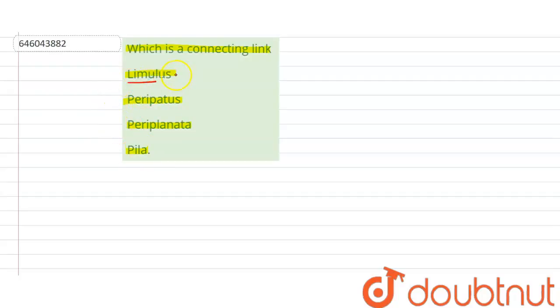First is Limulus. Limulus is also known as horseshoe crab, and it is not a connecting link.